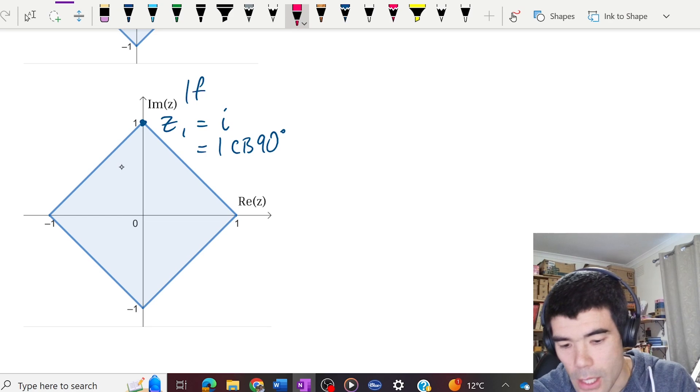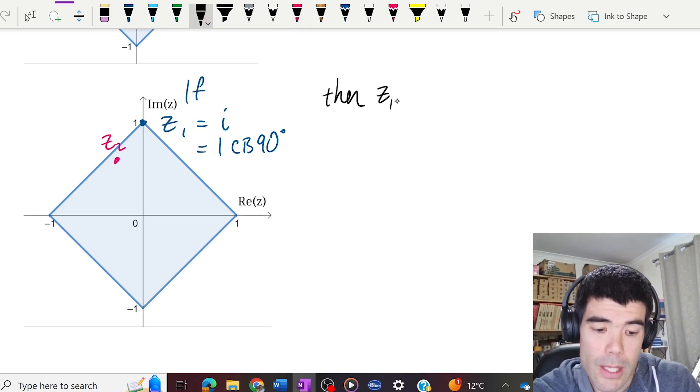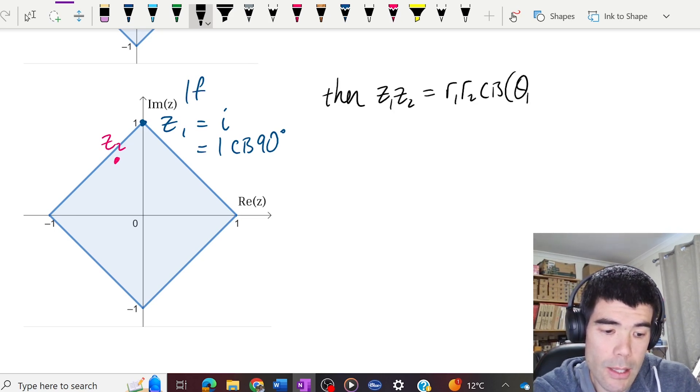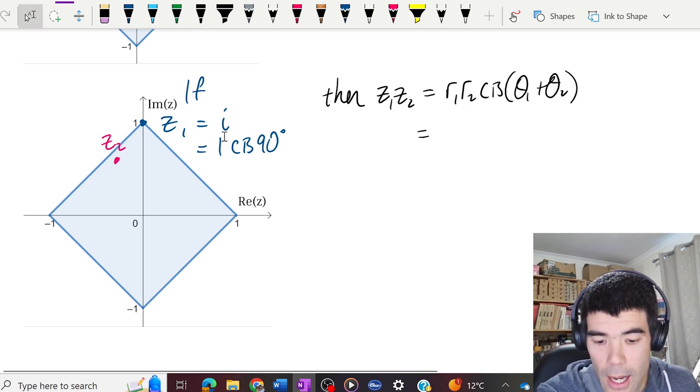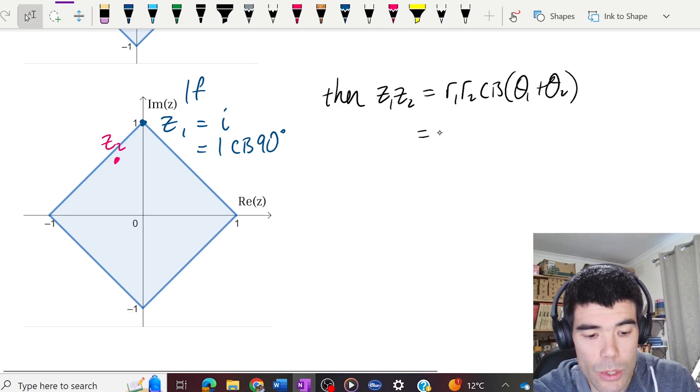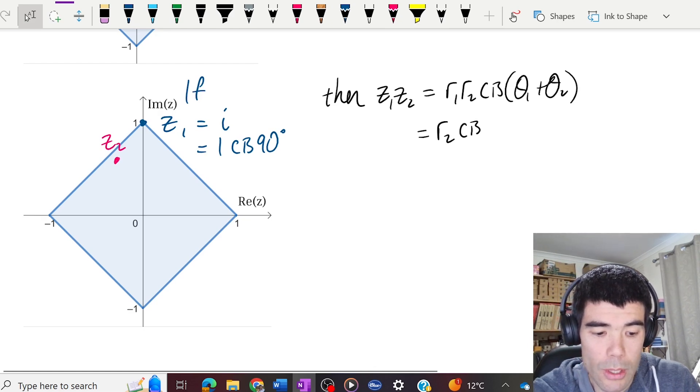Z2 we can place anywhere. z1 z2 will be equal to, as we've said before, r1 r2 cis θ1 plus θ2. In this case r1 is 1 and θ1 is 90 degrees. So this will just be r2 cis 90 plus θ2.